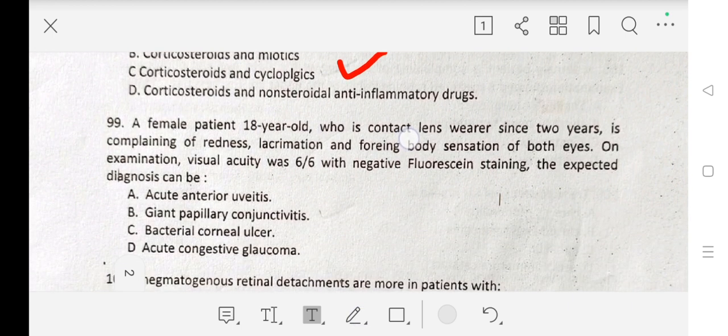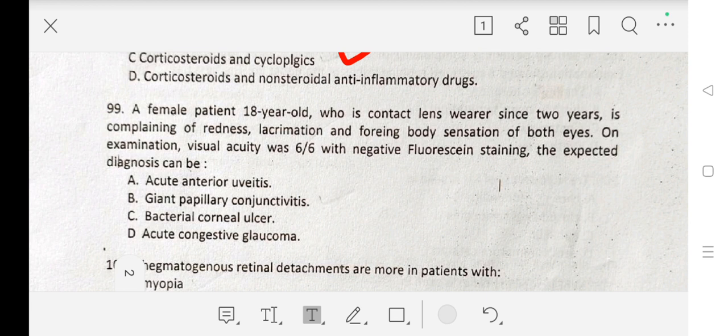Question number 99 is: A female patient 18 years old who is wearing contact lens since two years is complaining of redness, lacrimation, and foreign body sensation of both eyes. On examination, visual acuity was 6/6 with negative fluorescein staining. The expected diagnosis can be A. acute anterior uveitis, B. giant papillary conjunctivitis, C. bacterial corneal ulcer, D. acute congestive glaucoma. Our correct answer is B. giant papillary conjunctivitis.